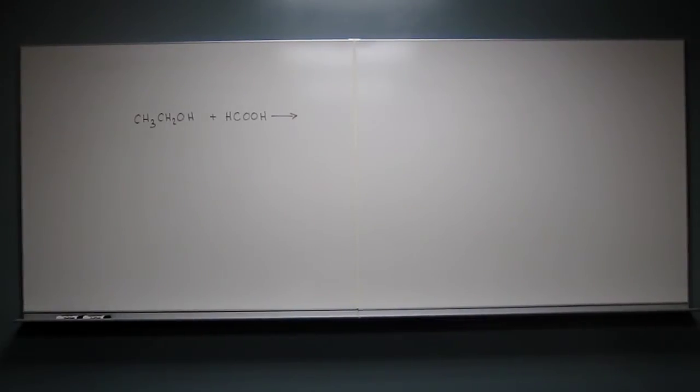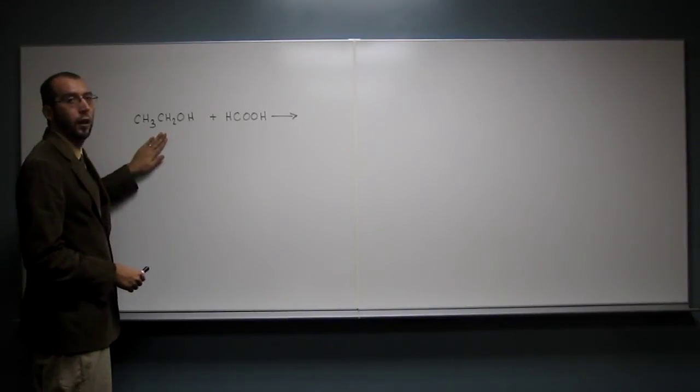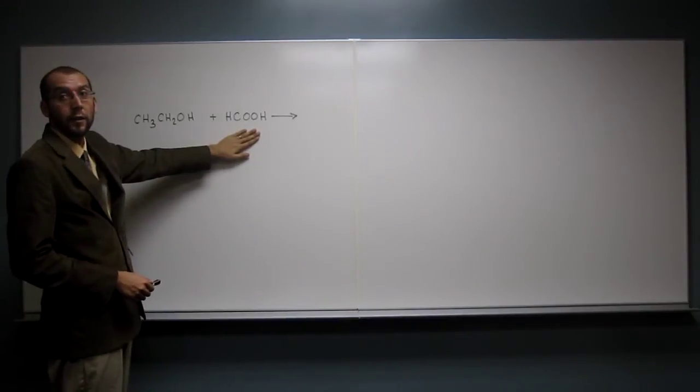Let's do this problem here. It says, predict the product of the following reaction. So we've got ethanol, which is an alcohol, reacting with formic acid, which is a carboxylic acid.